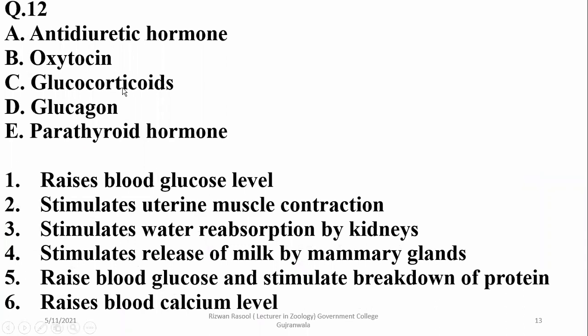The options are antidiuretic hormone, oxytocin, glucagon, and parathyroid hormone. Which of the following raises blood glucose level? It is glucagon, as well as some glucocorticoids, which also cause an increase in blood glucose level. So both C and D are relevant. Which stimulates uterine muscle contraction? It is oxytocin.